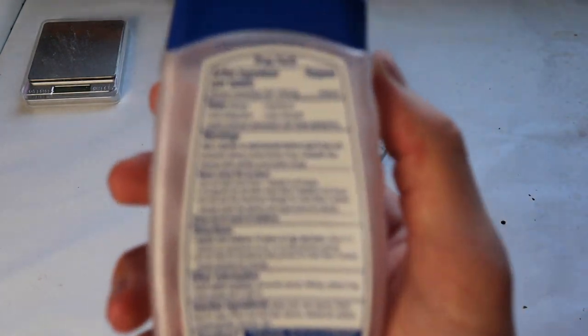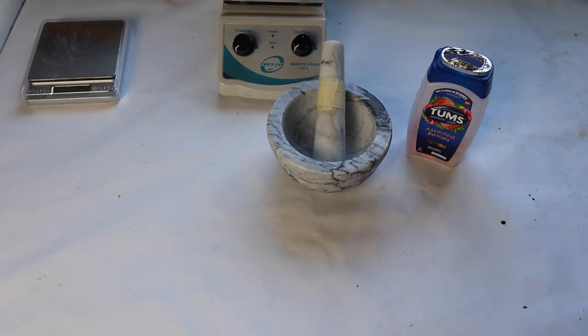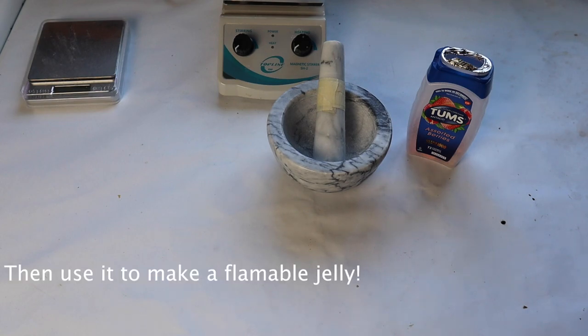The active ingredient in Tums is calcium carbonate. In this video I'm going to extract the calcium carbonate, relatively impurely, and then I will convert it to calcium acetate.